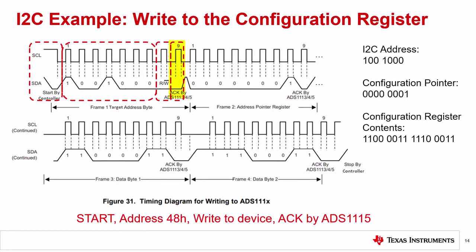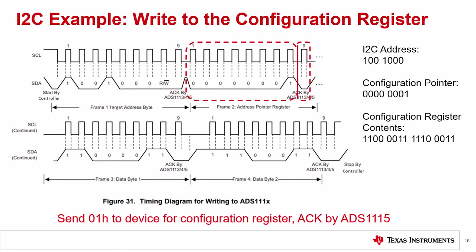If a target has a matching address, they will acknowledge to let the controller know that this is a valid address and they are ready to receive information. This acknowledge lets the controller know that the target device is ready for communication. After we've indicated that we want to write to the ADS-1115, we need to tell the device that we want to write to the configuration register. The second byte is the register pointer for the configuration register. Here we send 00000001 to the ADS-1115. As a response, the ADS-1115 pulls down on SDA for an acknowledge. The target device is letting the controller know it has received the address pointer data.